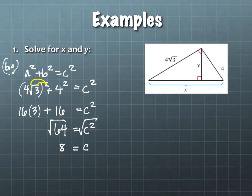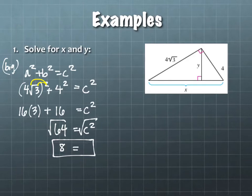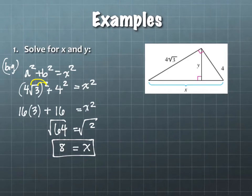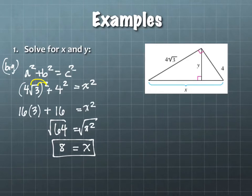There are no units given on our triangle, so we don't have to put any units on our answers. C, which is our X — so that's X equals 8.